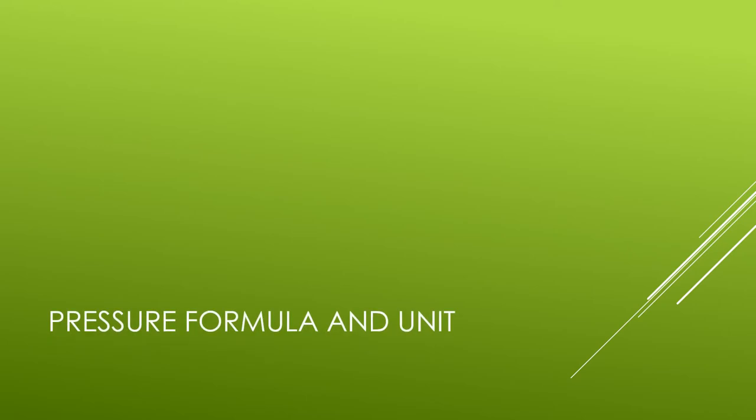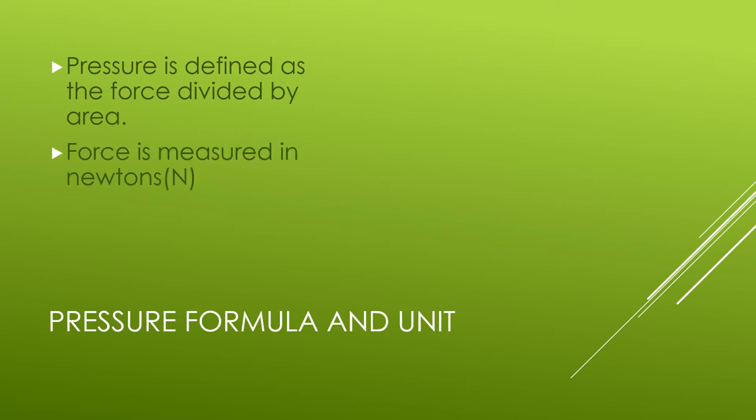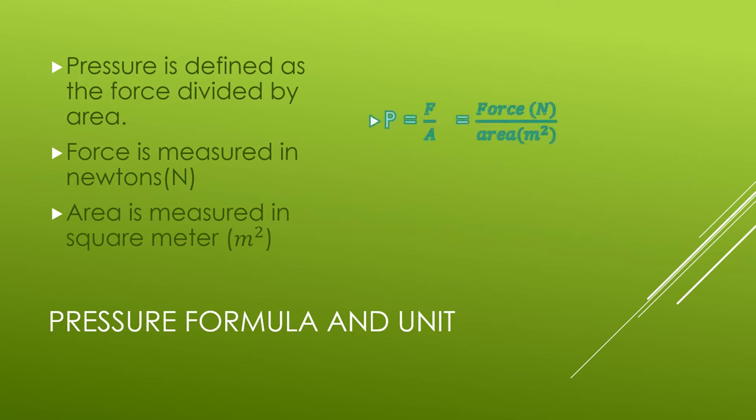Now, we discuss the pressure formula and its unit. Pressure is defined mathematically. It is the force divided by area. Force is measured in Newton. And area is measured in square meter. That's why the formula for pressure is capital P, which is the symbol of pressure. It is equal to capital F upon capital A.